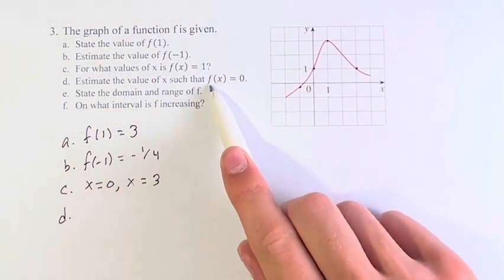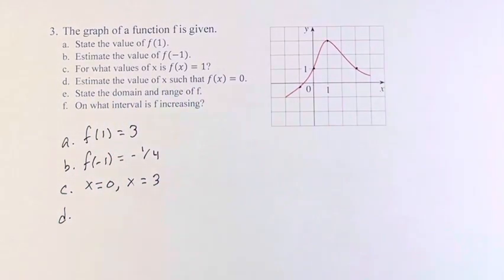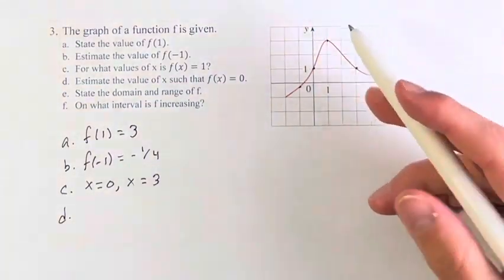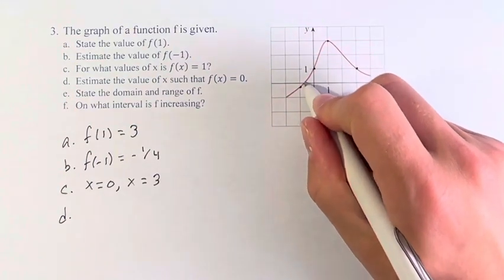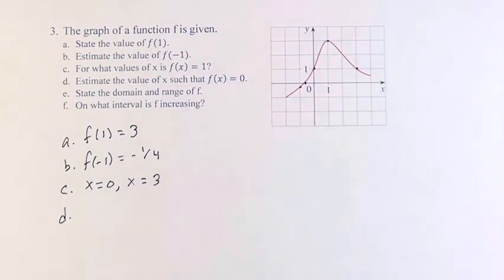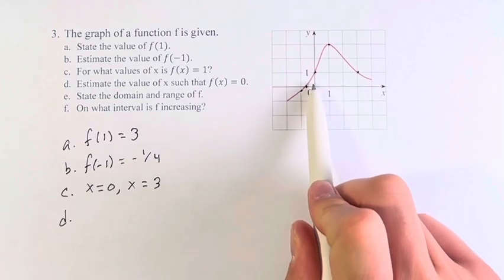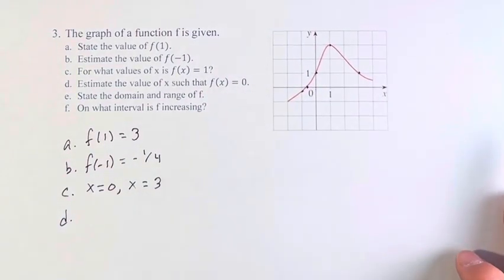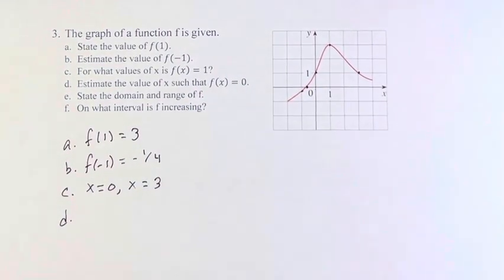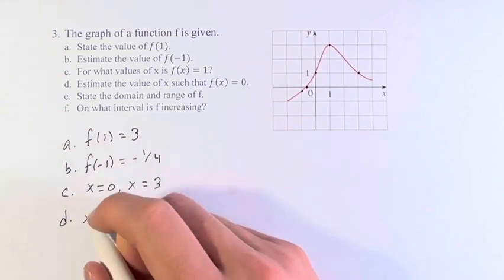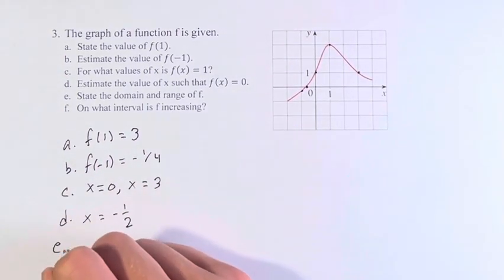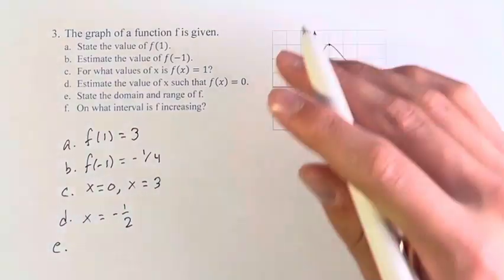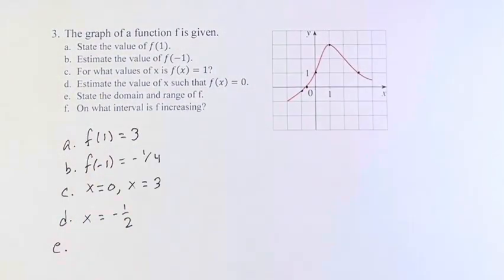Next, we're asked to estimate the value of x such that f(x) equals 0. We look for when y equals 0, which is the x-axis. The function crosses right here, between 0 and -1. It's not particularly close to either one, so we can say x equals -1/2. Again, you can pick any number close to -1/2 and you'll be fine. It's just an estimate.